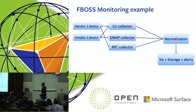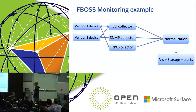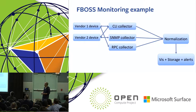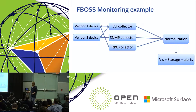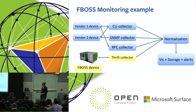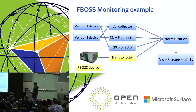This is another example of how we extend our monitoring system to support FBOS. When monitoring vendor devices, we typically go through collectors like CLI, SNMP, and NetConf RPC. After collecting vendor-specific information, we send the data to a normalization service, making it vendor-agnostic. That data is then sent to downstream systems like visualization, storage, and alerting. Since FBOS only communicates through the Thrift protocol, we added a Thrift collector to collect FBOS-specific information. Once collected, we send it to the same normalization service, and in our case there were no code changes needed in the downstream systems.